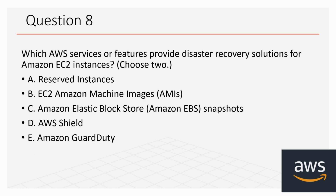Question eight: which AWS services or features provide disaster recovery solutions for Amazon EC2 instances? Choose two. The options are reserved instances, EC2 Amazon Machine Images (AMIs), Amazon Elastic Block Store snapshots, AWS Shield, and Amazon GuardDuty. The correct answers are EC2 AMIs and EBS snapshots. Snapshots provide continuous backups to aid disaster recovery, while AMIs are templates that also leverage backup and recovery options on the backend.